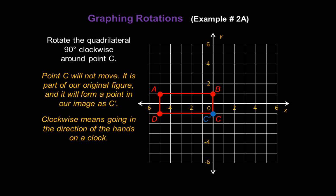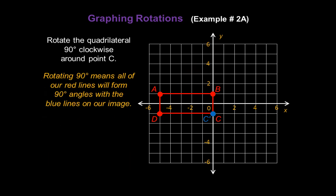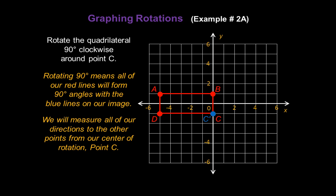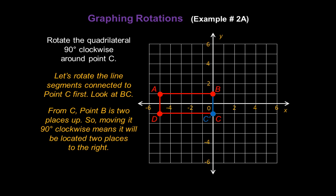Clockwise means going in the direction of the hands on a clock, like this. So points A, B, and D are going to rotate up and to the right. Rotating 90 degrees means all of our red lines will form 90 degree angles with respect to the blue lines on our image. We're going to measure all of our directions to the other points from our center of rotation, point C. Let's rotate the line segments connected to point C first. Take a look at line segment BC. From C, point B is two places up, so moving it 90 degrees clockwise means it's going to be located two places to the right. That end point is now B prime.